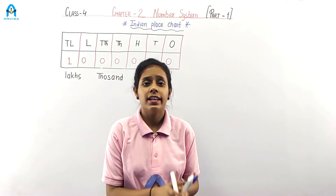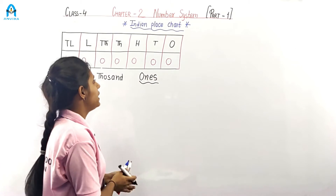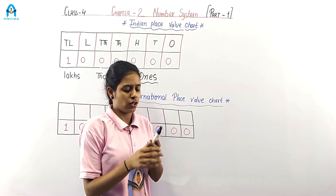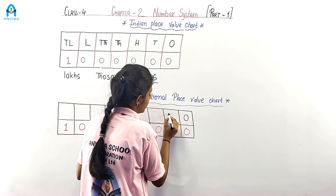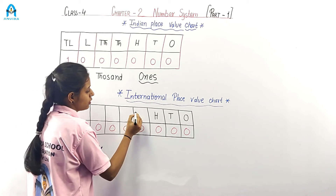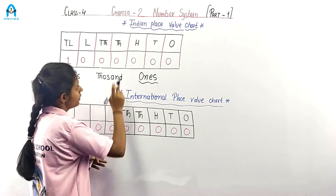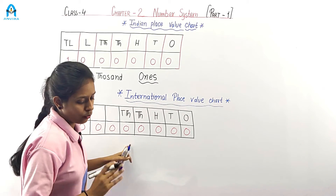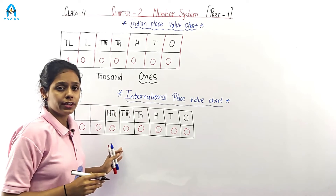Now let's learn about the international place value system. Starting from ones, then tens, then hundreds, then thousands and ten thousands — these are the same as Indian. The next place is called hundred thousands.